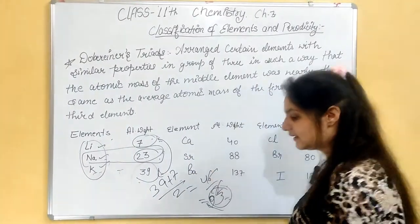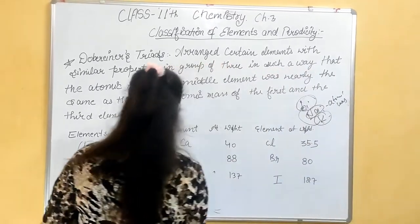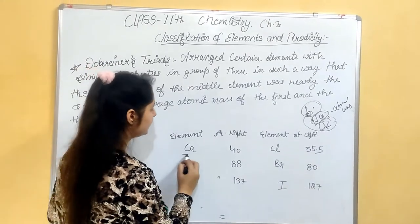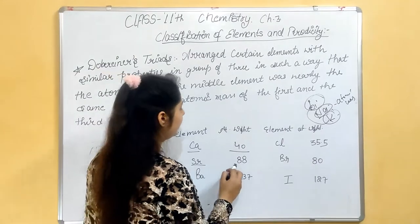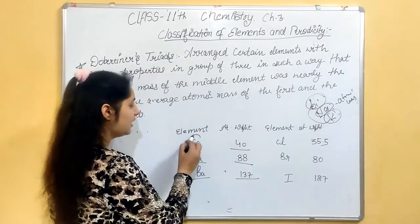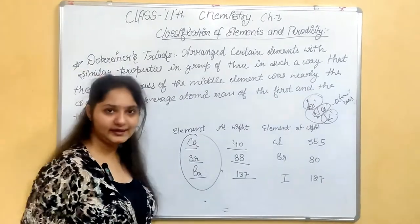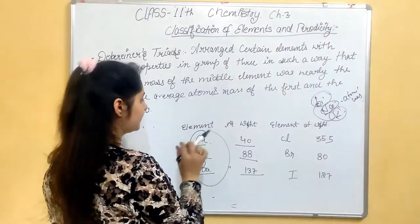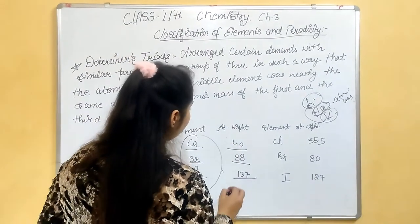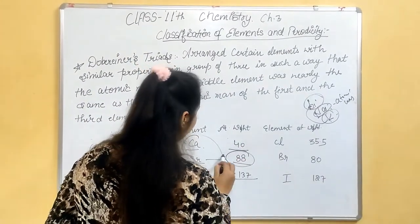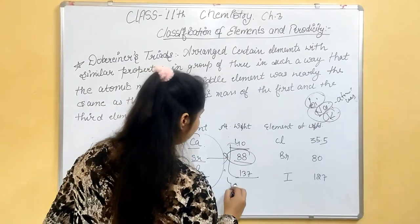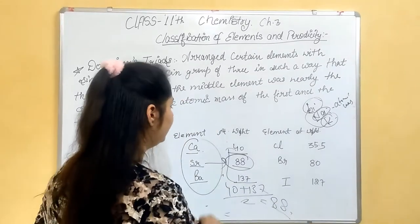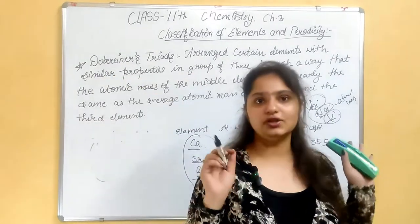Next example is Ca, Sr, and Ba. Ca has atomic weight 40, Sr has 88, Ba has 137. Similarly, these three elements had same properties - physical and chemical. So he grouped them. Here Sr's atomic mass equals the average of the other two: 40 plus 137 divided by 2 equals 88. This is how he found this classification.